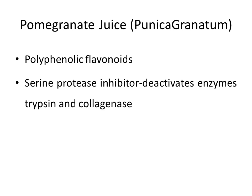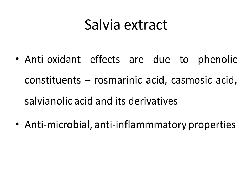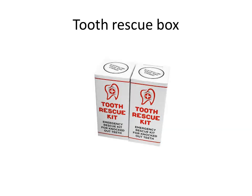Natural ingredients as storage media include pomegranate juice (Punica granatum), which contains polyphenolic flavonoids with antioxidant properties and serine protease inhibitors that deactivate trypsin and collagenase — once collagenase is inhibited, collagen fibers do not undergo degradation, resulting in stronger reattachment. Salvia extract has antioxidant effects due to phenolic constituents including rosmarinic acid, carnosic acid, and salvinonic acid and its derivatives, with additional antimicrobial and anti-inflammatory properties. The tooth rescue box contains a special cell culture medium with various metabolites essential for PDL fiber regeneration. The tooth can be placed in the tooth rescue box for 15 minutes to improve replantation prognosis, and it is recommended that the tooth rescue box be present in first aid kits.